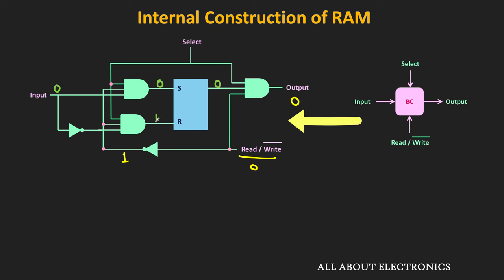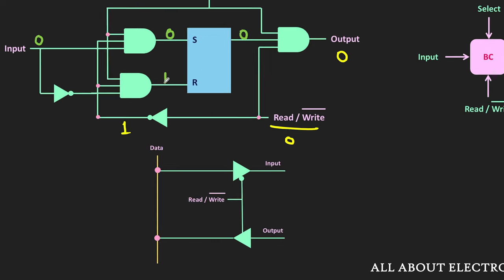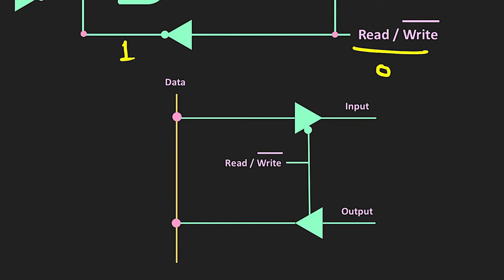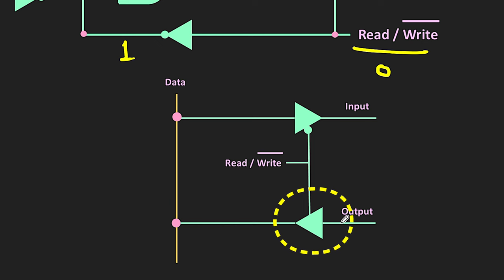In the memory, typically the same data lines are used for both input and output. Using a bidirectional buffer, the same data lines can be shared between input and output. When the read signal is equal to 1, the lower buffer gets activated and the output of the binary cell is available on the data line.